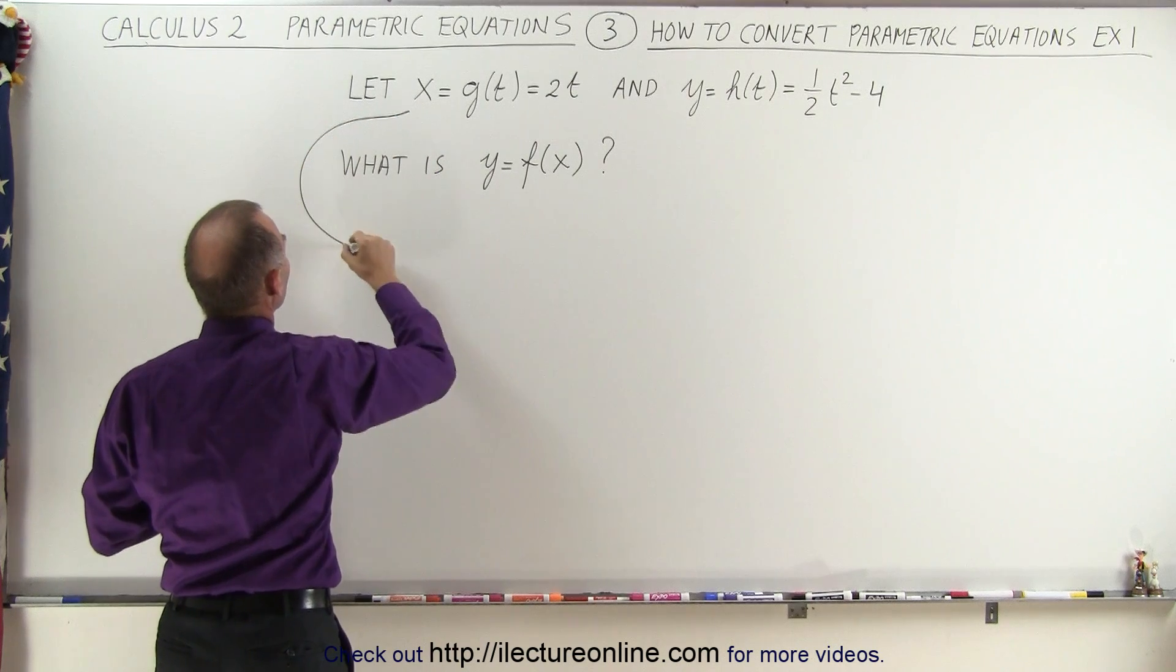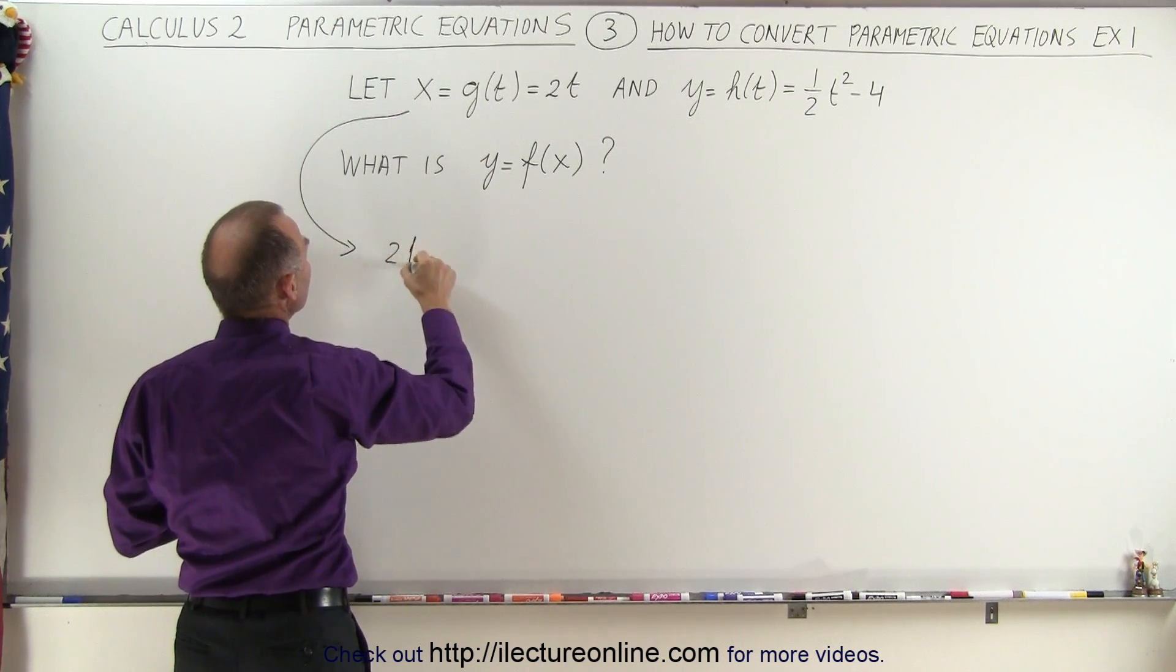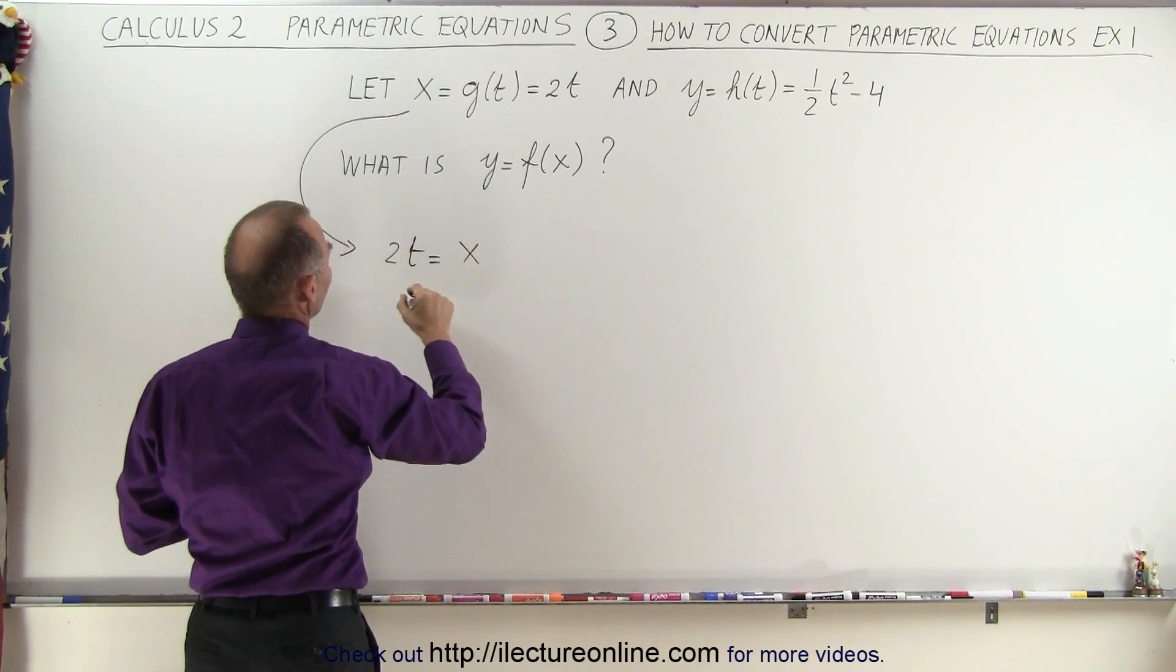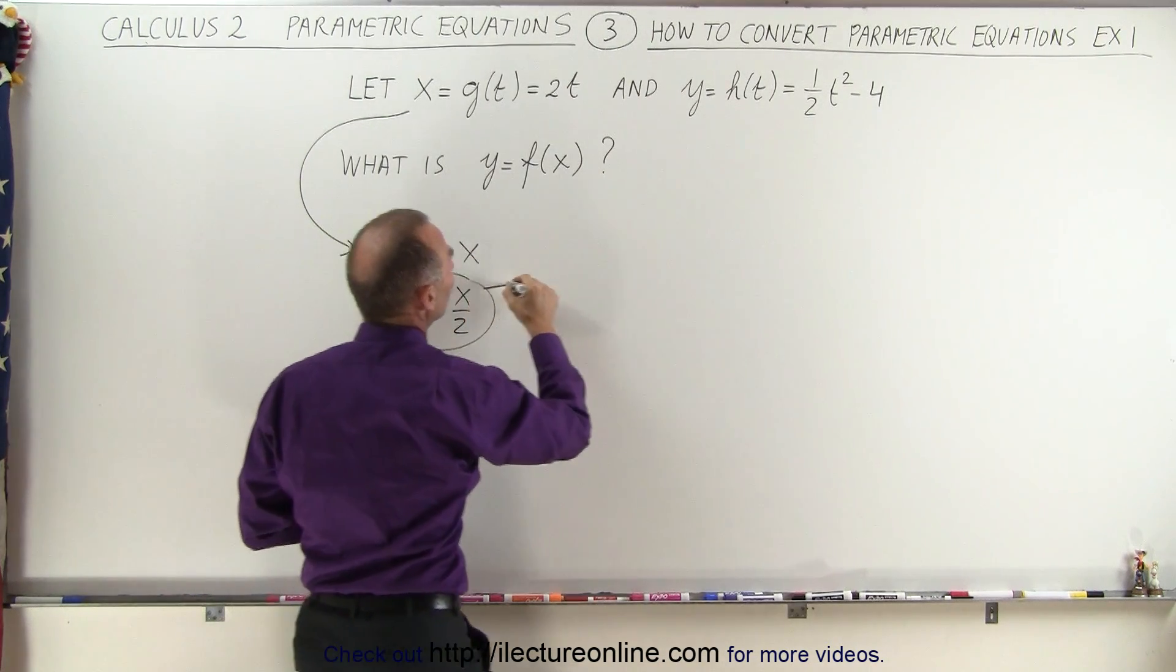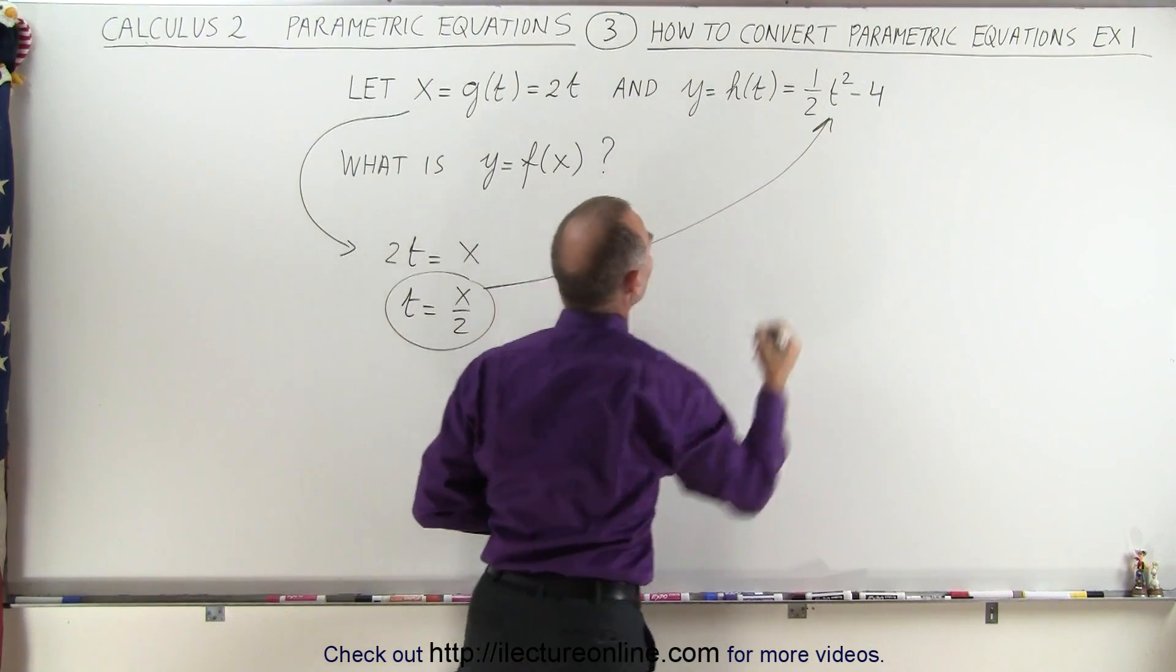So if we take this equation right here, and we write that 2t is equal to x, and therefore t is equal to x over 2, then we take that and substitute that back into the other equation.